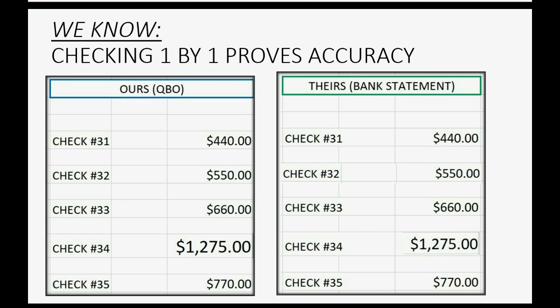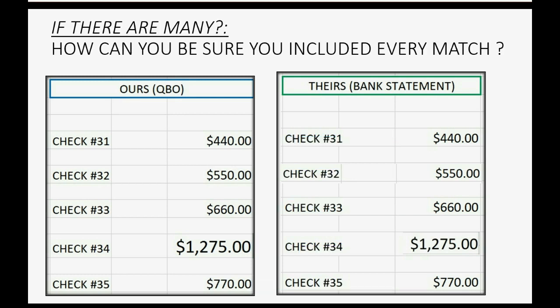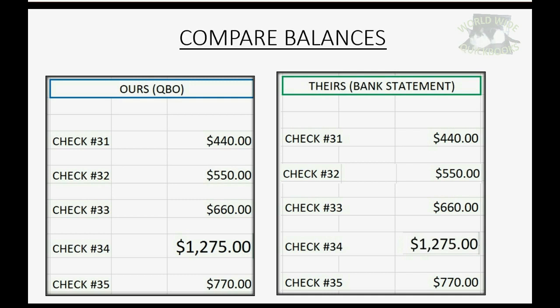We know that checking one by one proves accuracy, and if we go through our records carefully and match all of our numbers to the bank's numbers we know that everything is correct, as explained in the previous video. However, if there are many transactions, how can we be sure that we matched everything properly? In other words, the mistake we're looking for might not be found if we make a mistake while doing the bank reconciliation.